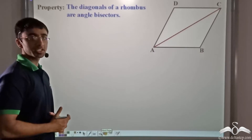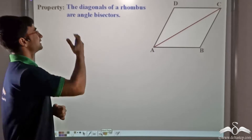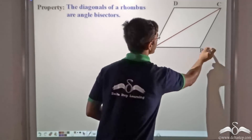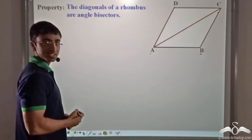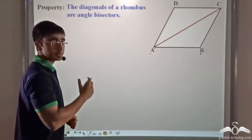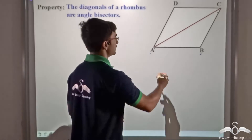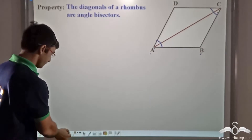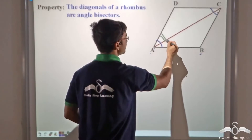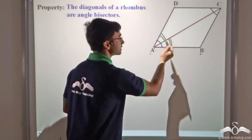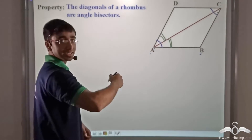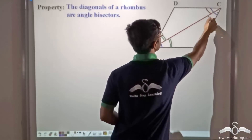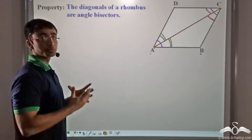Now we are going to talk about another property of a rhombus. The property states that the diagonals of a rhombus are angular bisectors. This means that if we have a rhombus ABCD and we construct diagonal AC, then AC bisects the angles it cuts — angle A and angle C are bisected by AC. So angle DAC equals angle CAB, and at the other end, angle ACD equals angle ACB. This is the property we need to prove.